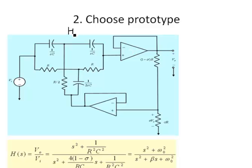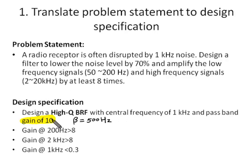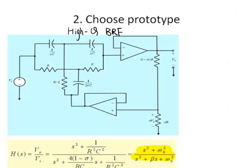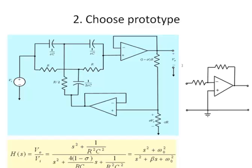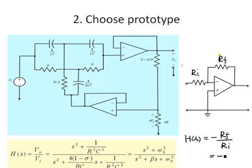For the high Q band reject filter introduced in our textbook, we have analyzed the transfer function theoretically. The maximum gain of the circuit is 1. If we want to use this high Q band reject filter with a pass band gain of 10, we need to add another stage — an inverting amplifier with just two components, Rf and Ri. We need to make Rf over Ri equal to 10, so that when the two stages are cascaded, the pass band gain will be 10.